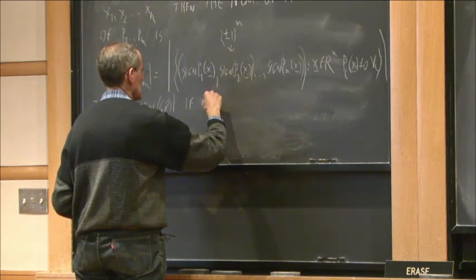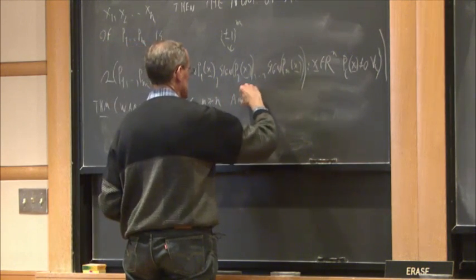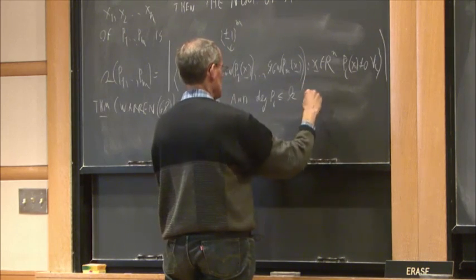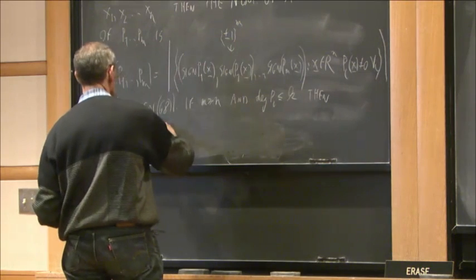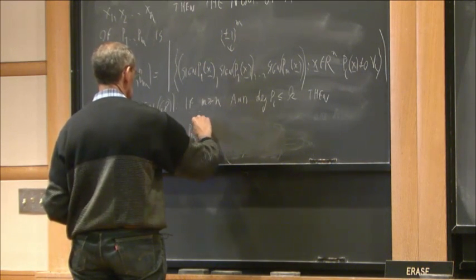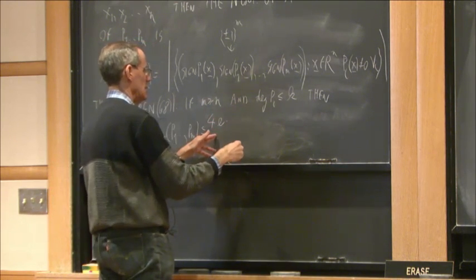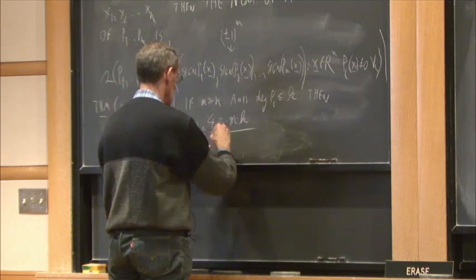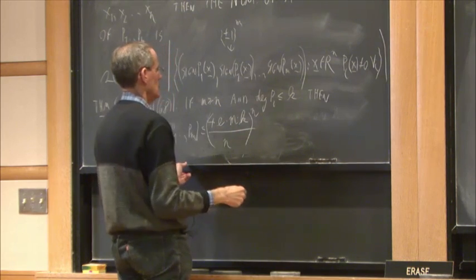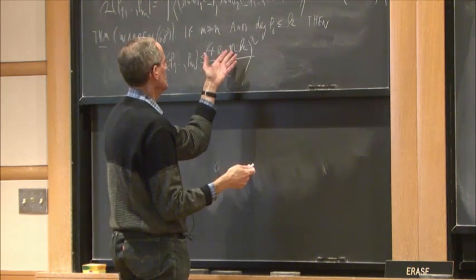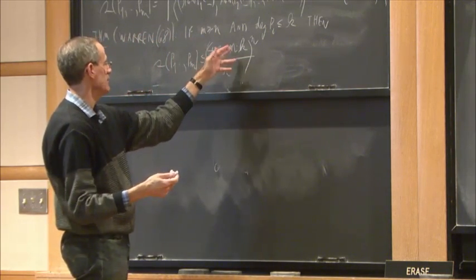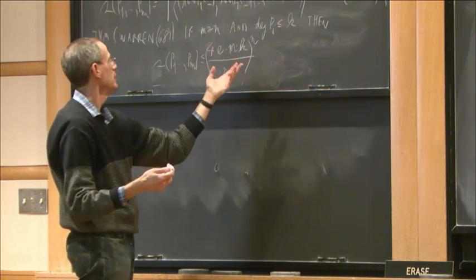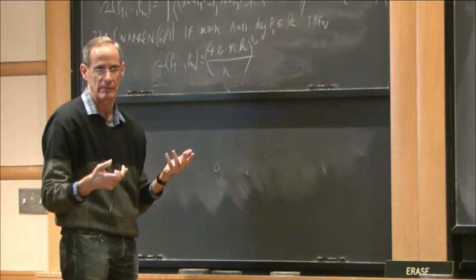Warren's theorem says: if m ≥ n and each polynomial p_i has degree at most k, then the number of sign patterns is at most (4emk/n)^n. This is useful only if m is significantly bigger than n, because then even if the degree is n, this behaves only like n^n rather than 2^m.